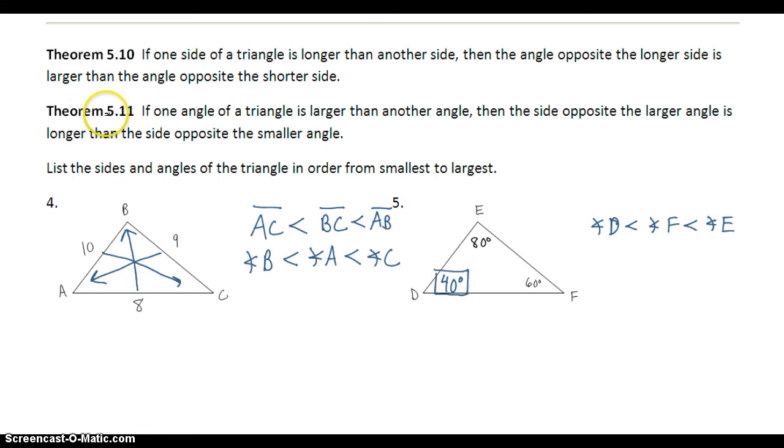And if I look at theorem 5.11, it's saying the same thing as theorem 5.10, but with angles instead of sides. So my smallest angle is 40 degrees, that's going to tell me about my smallest side. So 40, opposite of 40, is EF. So EF is my smallest side. F is my middle angle, opposite of F is DE. So DE is my middle side length. And E is my biggest angle, so opposite of E is DF, my biggest side.